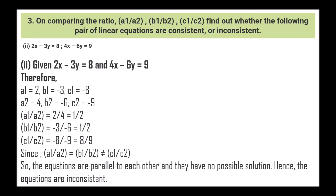Next: 2x - 3y = 8 and 4x - 6y = 9. So a1 = 2, b1 = -3, c1 = -8, a2 = 4, b2 = -6, c2 = -9. a1/a2 = 2/4 = 1/2, b1/b2 = -3/-6 = 1/2, and c1/c2 = -8/-9 = 8/9. Since a1/a2 = b1/b2 but not equal to c1/c2, the equations are parallel to each other and have no possible solution. Hence the equations are inconsistent.